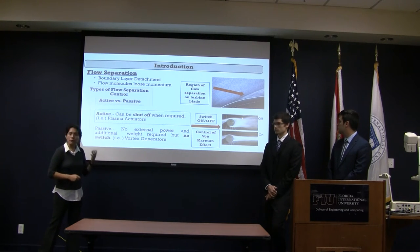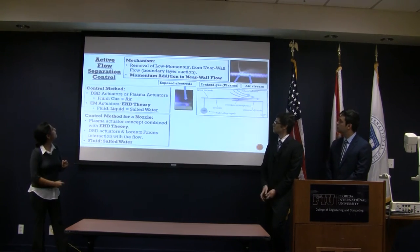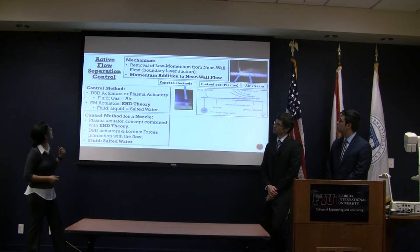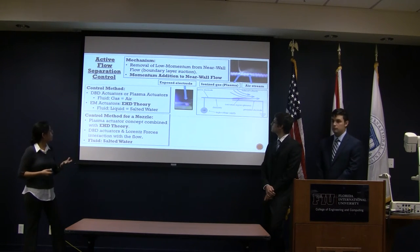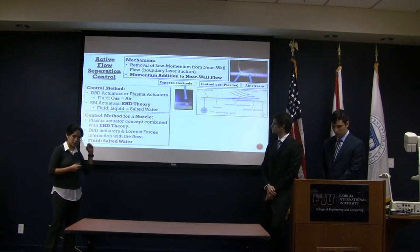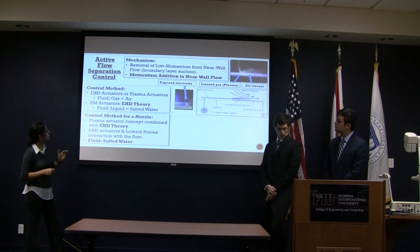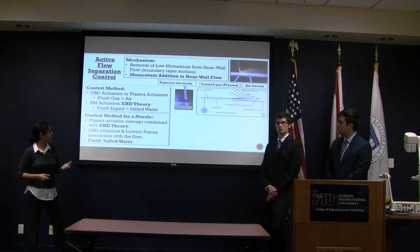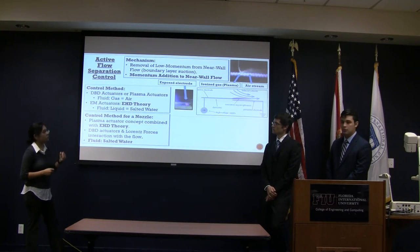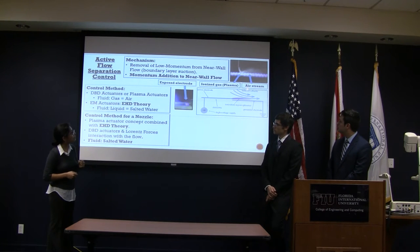For example, here we have an active control system acting to control a von Kármán effect on a cylinder. For our project, we're using an active flow control separation mechanism, which is going to add momentum to the near-wall flow. We have two types of control mechanisms: one that depends on air, and the other on water. DBD actuators and plasma actuators are usually used when the gas is air, and electromagnetic actuators, which use the electro-hydrodynamic theory, are usually used when the fluid is salt water.